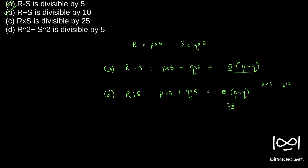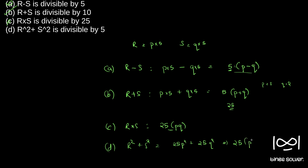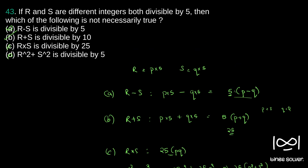If we check the rest: R into S is divisible by 25 — R into S becomes P into 5 times Q into 5, which is 25 into PQ. So 25 into PQ is divisible by 25, meaning C is not our answer. And R squared plus S squared equals 25P squared plus 25Q squared, which is 25 into (P squared plus Q squared), divisible by 5 and even by 25. So that is also not the answer. Our solution to question 43 is B — R plus S is divisible by 10 is not necessarily true.